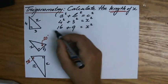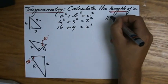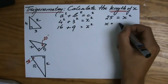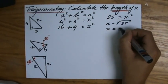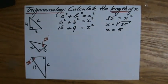And if I just continue here, 16 plus 9, that would be 25 is x squared. That makes x the square root of 25, and that equals 5.